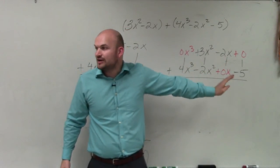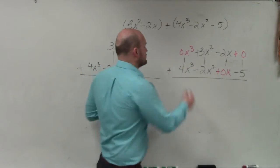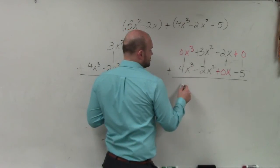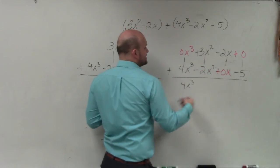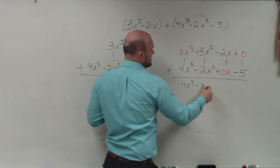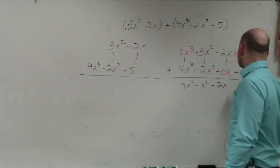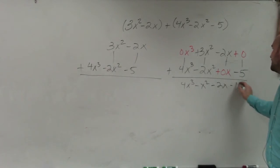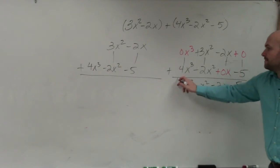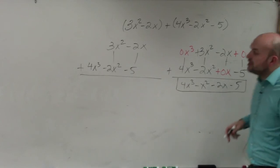They're like terms if they have the same variable factors. So therefore, 0x³ plus 4x³ is going to be 4x³. 3x² minus 2x² is negative x². Negative 2x plus 0x is negative 2x. And 0 minus 5 is negative 5.